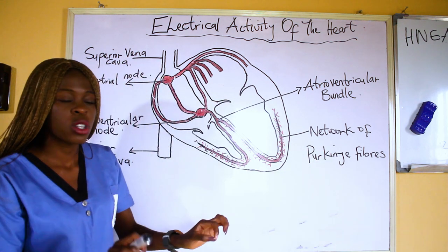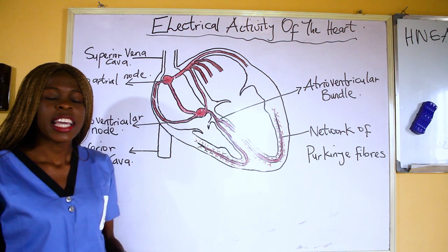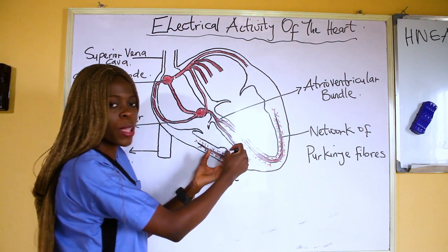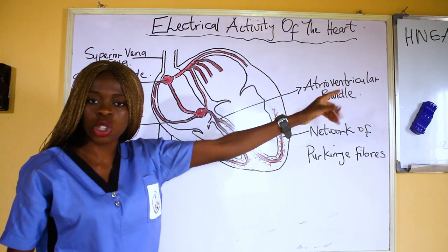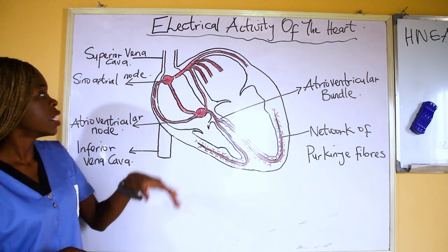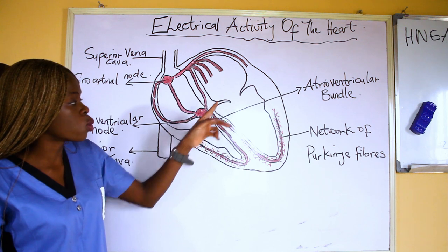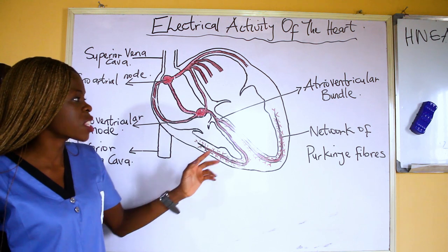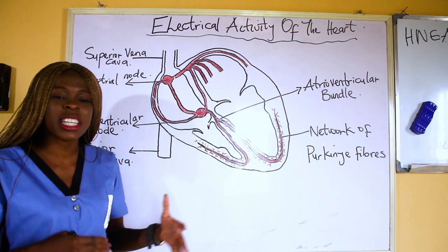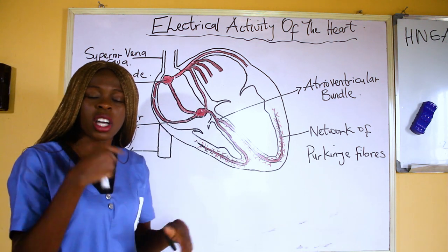These branches form fibers known as the network of Purkinje fibers, which you can see spreading throughout the ventricles. It is these Purkinje fibers that help in the contraction of the myocardium — the muscle layer of the heart. When there is contraction of the myocardium, it pushes blood into the pulmonary artery or to the aorta. So in summary: impulses are generated in the sinoatrial node, travel to the atrioventricular node, then to the atrioventricular bundle dividing right and left, and finally a network of Purkinje fibers causes myocardial contraction, ejecting blood from the ventricles.